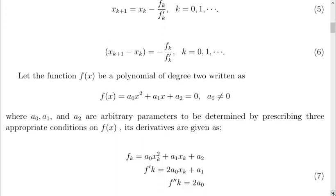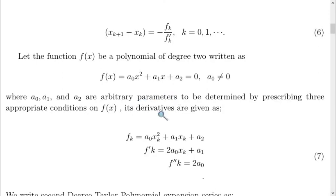a naught, a1, and a2 can be determined by first of all differentiating this function, just like we did in the first degree, differentiating it twice. Differentiating it twice, we have this and this.